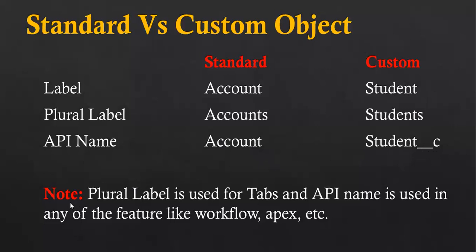The plural label is used for tabs, and the API name is used in features like workflow and APIs, etc. So both tabs and API name are useful and important to know.